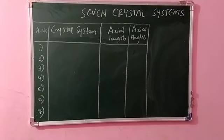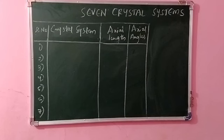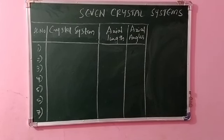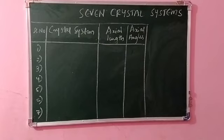Hi, hello, this is Shweta, welcome to my classes. Today we will study seven crystal systems. Seven types of basic or primitive unit cells have been recognized among crystals. These are called the seven crystal systems or crystal habits, which today we are going to learn.